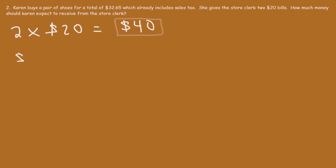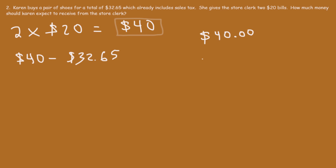The answer is going to be the difference between how much money she gives the store clerk and the price of the pair of shoes, which is $32.65. That's how much money Karen should expect to receive back. So this is basically a subtraction problem — we're going to subtract $32.65 from $40.